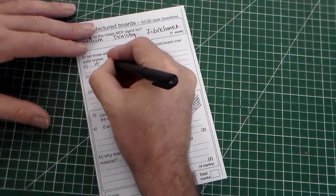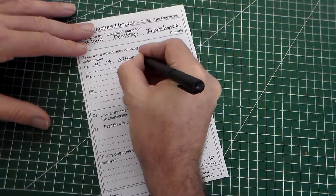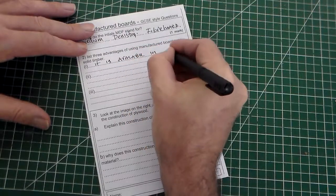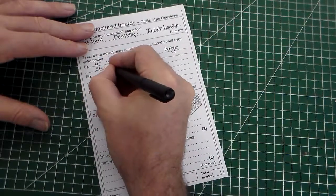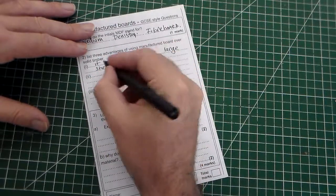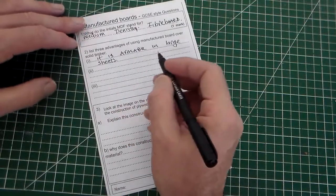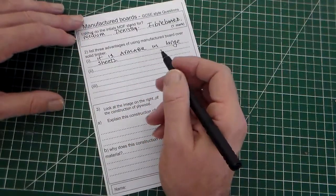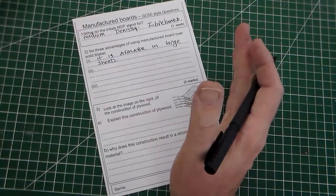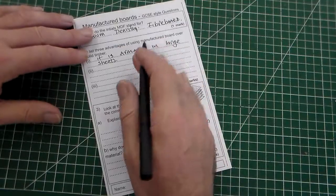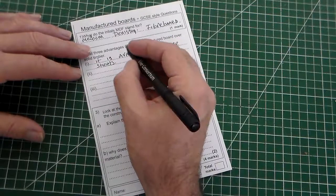Well, first of all, it is available in large sheets. Perhaps you should have said manufactured board is available in large sheets. Obviously, things like plywood are available in 8 foot by 4 foot sheets. So, if you want to make a tabletop or something, much easier than you can't do that with board or with wood.